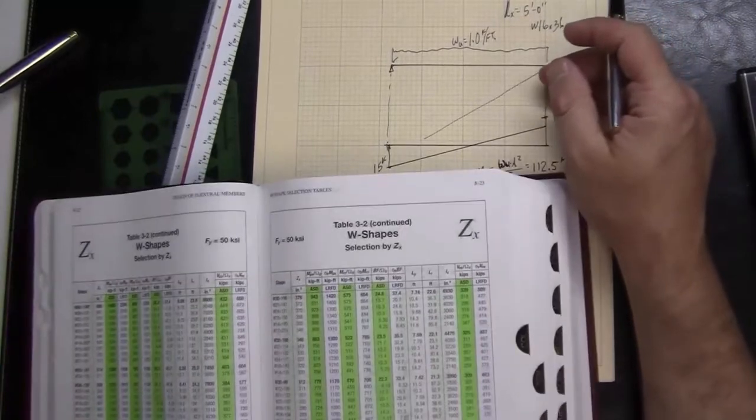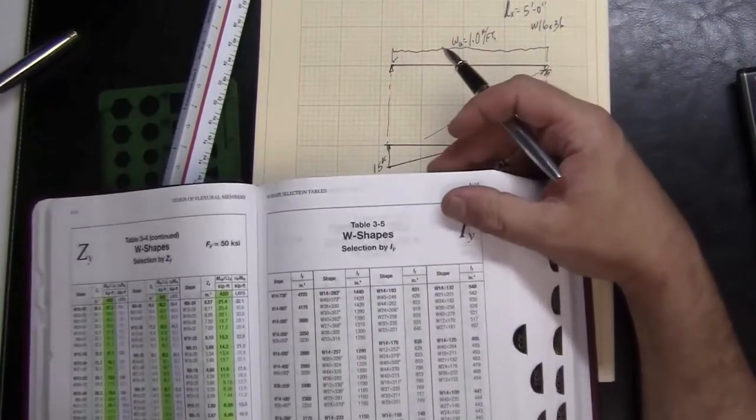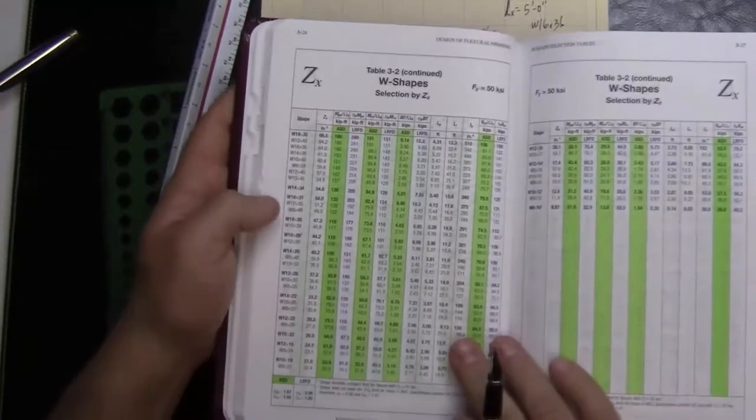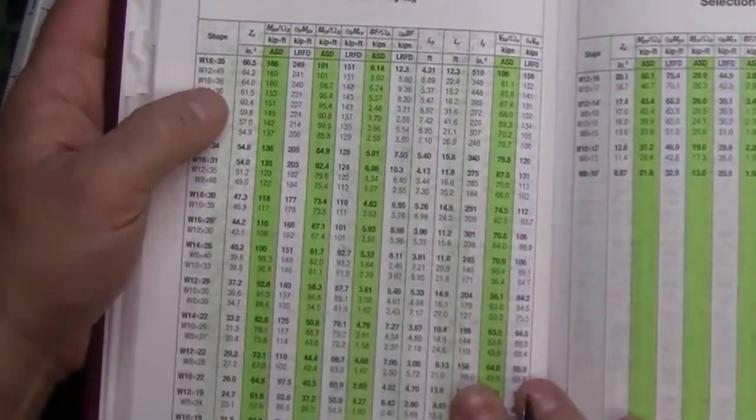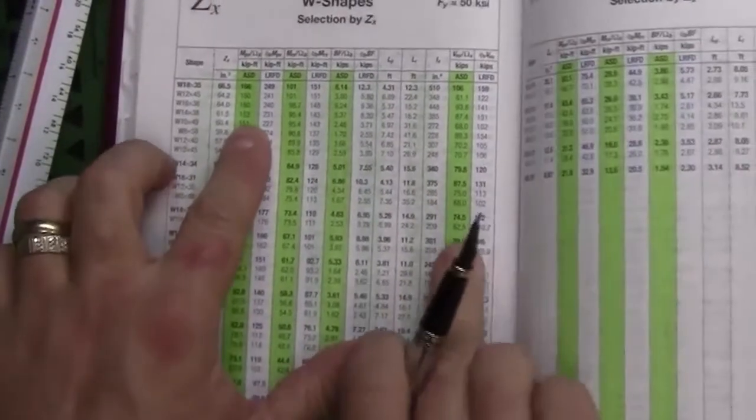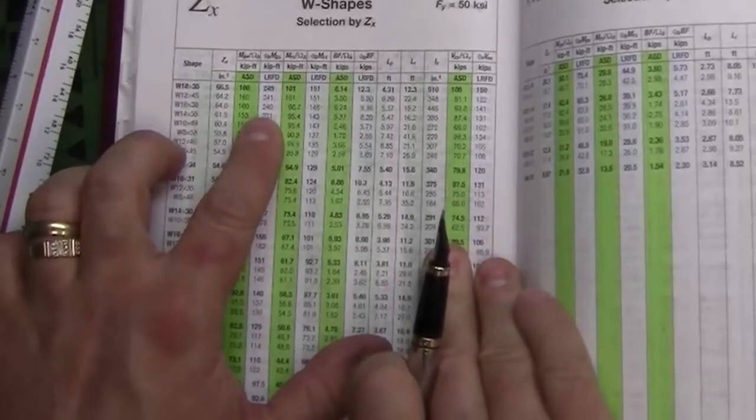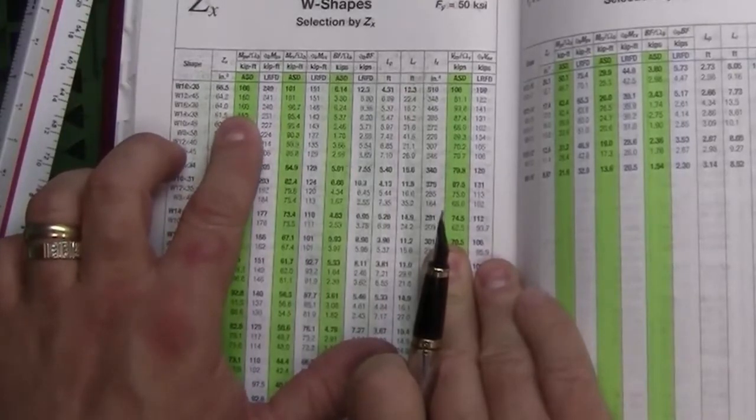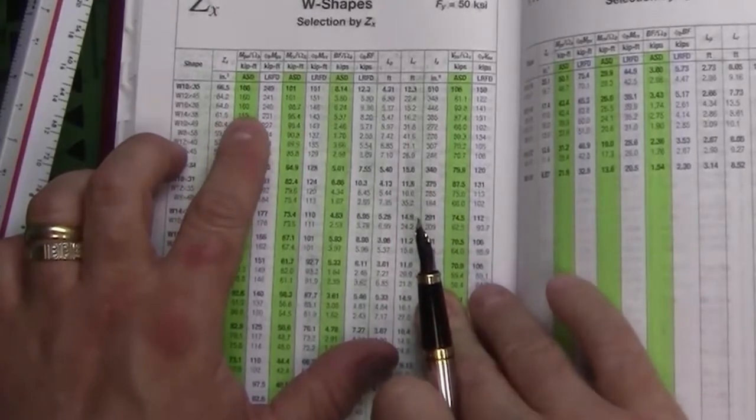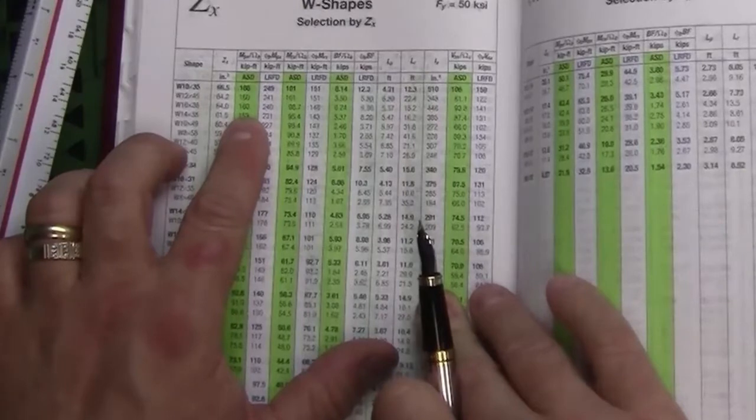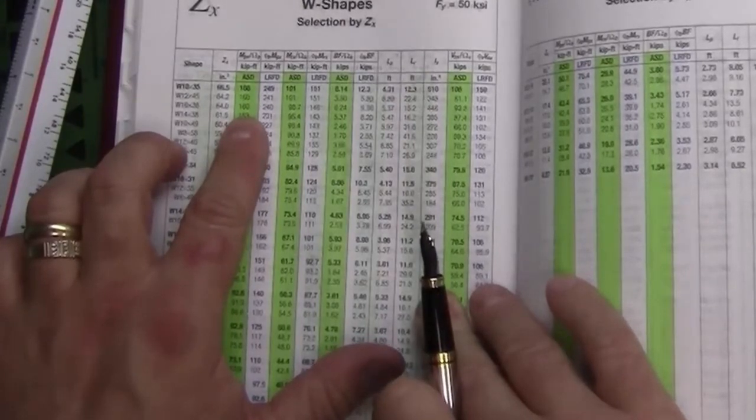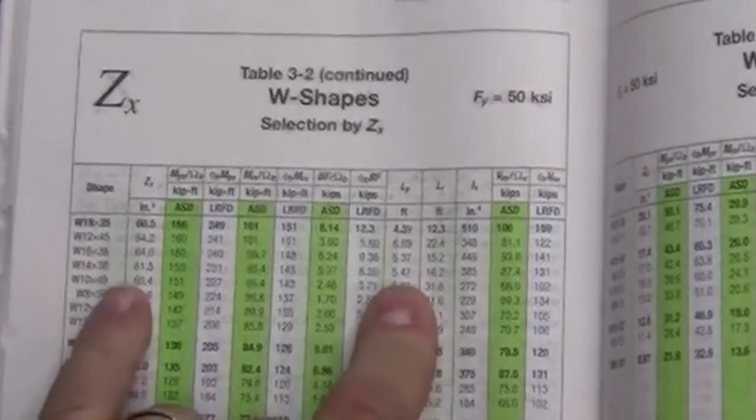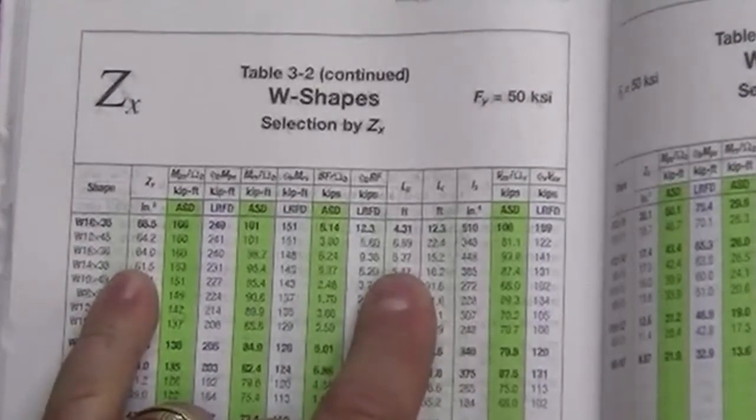And so what I want to look at here is go to a W16, the size of the member we're looking at, and look at a W16 by 36. If I were to go through this exercise, we could run it in ASD because we have not factored the load in robot, and that would be part of the comparison. But I'm looking at fully braced length of 160 kip feet, and if I come over and look at its dimensions we need to have that full braced length, it's 5.37 feet.